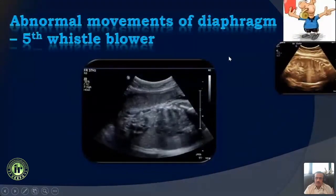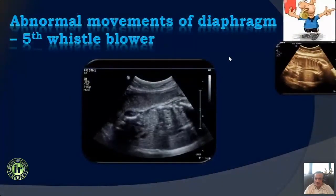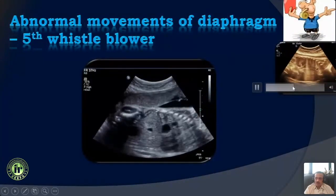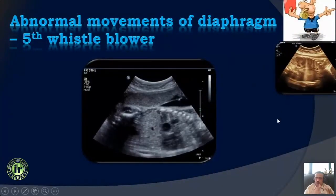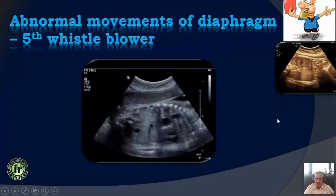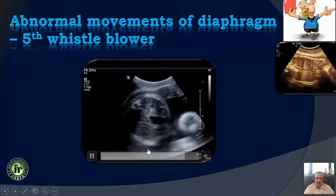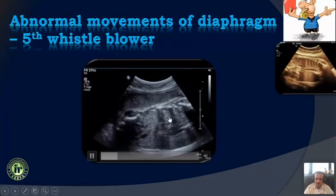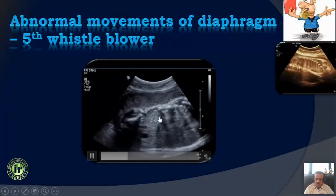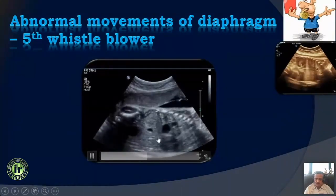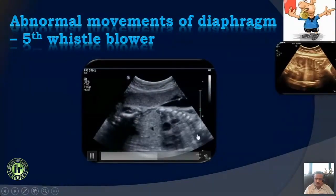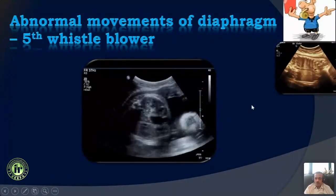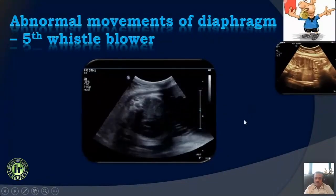The fifth whistleblower is the movement of the diaphragm. Both leaves of the diaphragm should move synchronously — that is very important. If you see paradoxical movements of the diaphragm, as shown here, where one leaflet is going up while the other is going down, that is another whistleblower for a possible thoracic abnormality.